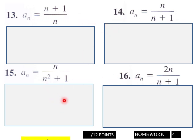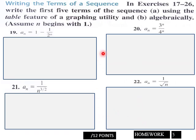Page five, write the first five terms of the sequence. That's A, and then using the table feature of a graphing utility, so that's by using your graphing calculator for first five terms.